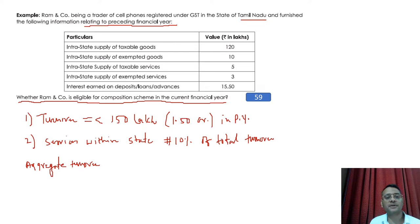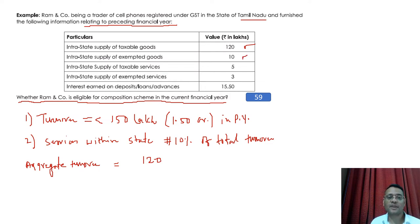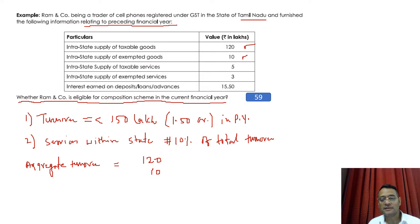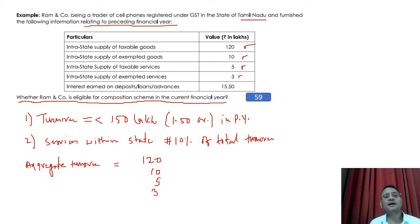Calculating aggregate turnover of Ram and Company: intrastate supply of taxable goods — 120 lakhs — is included. Intrastate supply of exempted goods — 10 lakhs — is also included, as any taxable or exempted intrastate or interstate supply of goods or services is added to aggregate turnover. Intrastate supply of taxable services — 5 lakhs — is added, and intrastate supply of exempted services — 3 lakhs — is also added.